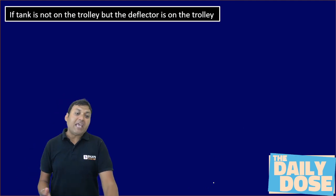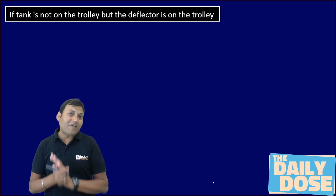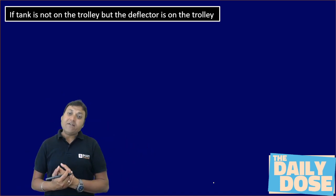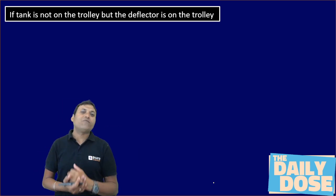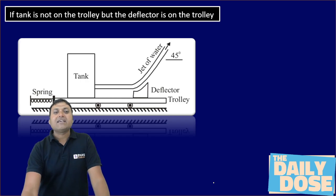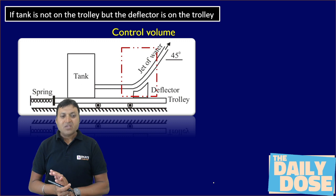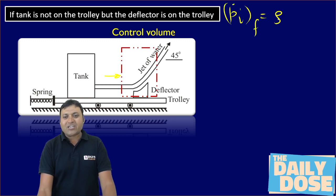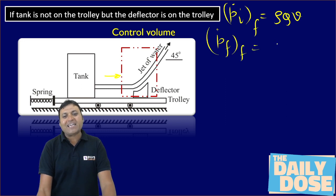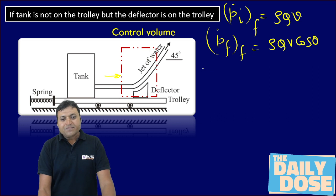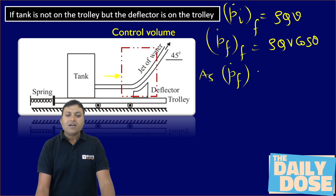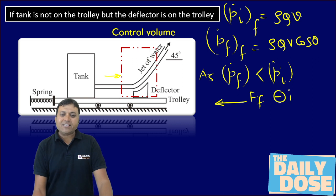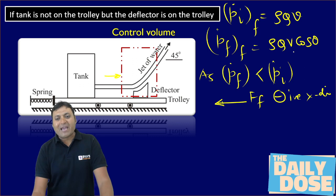Modifying the question again: if only the deflector is on the trolley (not the tank), the control volume is just the deflector. In this case, fluid enters the control volume in the x-direction, so the initial momentum is rho × Q × V and the final momentum in the x-direction is rho × Q × V × cos(theta). Since the final momentum is less than the initial, there is a force on the fluid in the negative x-direction, with magnitude rho × Q × V − rho × Q × V × cos(theta).